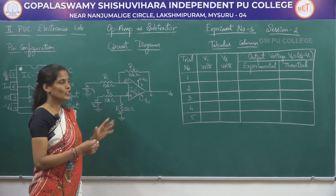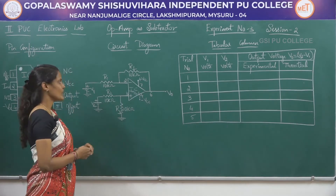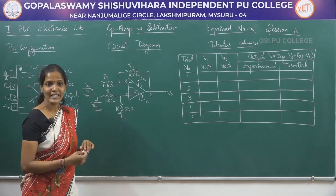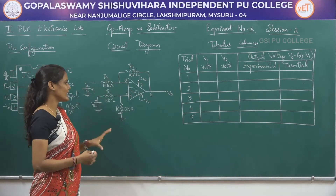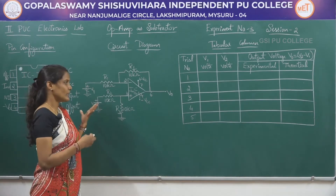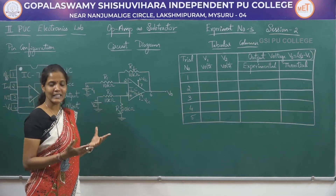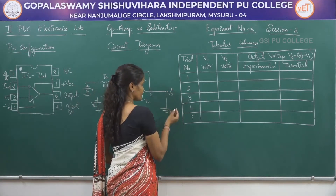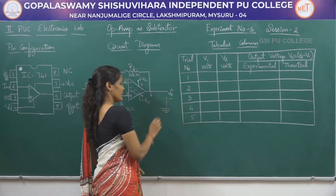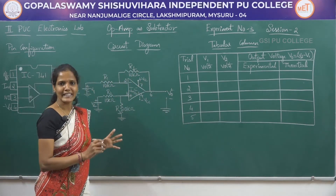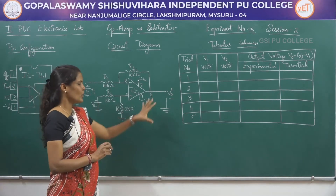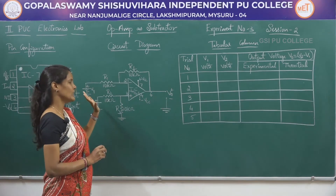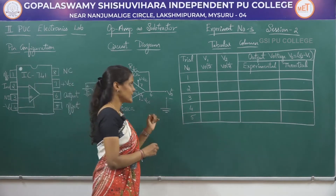Pin number 7 and 4 will be given plus VCC and minus VCC respectively. The resistor values R1, R2, R3, and R4 are all the same — all four resistors are equal to 10 kilo ohms. V-naught is the output voltage, and V-naught equals V2 minus V1. So this is the circuit which will be working as a subtractor.